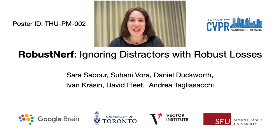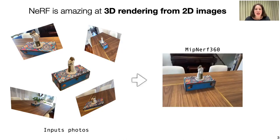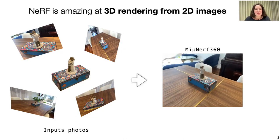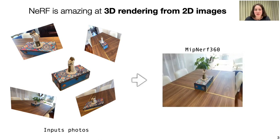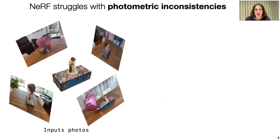Hi, I'm Sarah Savor and this talk is on our work called Robust NeRF. As we know, NeRF is great at multi-view 3D reconstruction from a smart set of 2D images. So given a set of images, methods like MipNeRF 360 can perfectly render the scene from all new viewpoints. But if you are given bad images, you get bad results.